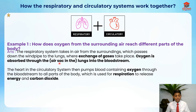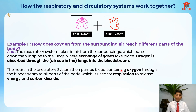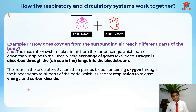If you are at a lower level you can just say through the lungs into the bloodstream. Now linking to the circulatory system: the heart then pumps blood containing oxygen through the bloodstream to all parts of the body, which is used for respiration to release energy and carbon dioxide. Knowing the respiration process is very important here.